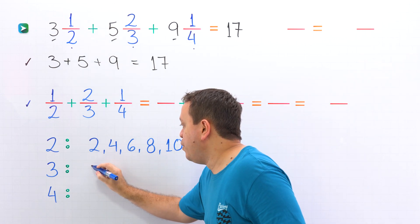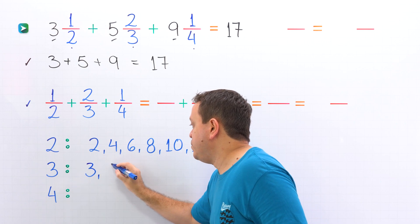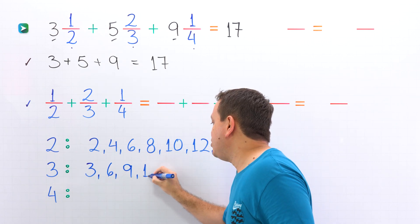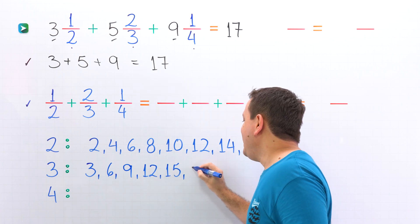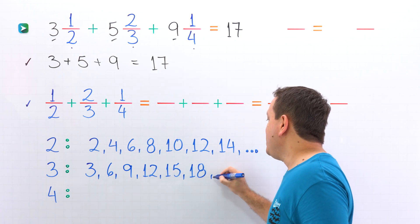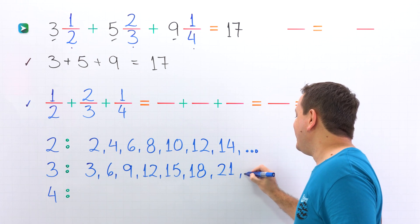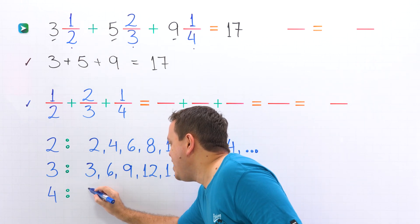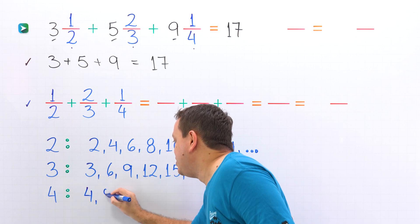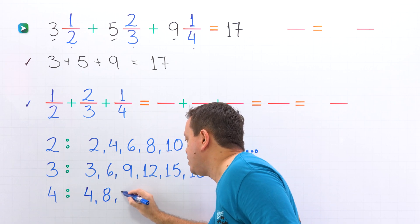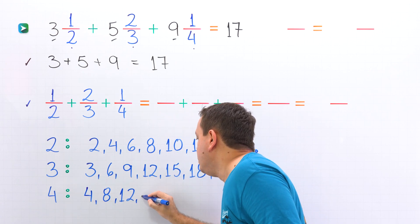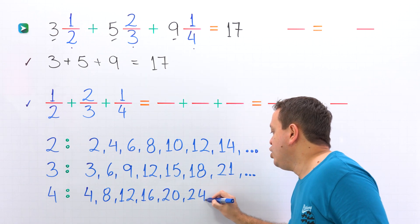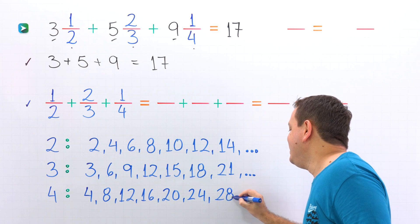The first multiples of three are: three, six, nine, twelve, fifteen, eighteen, twenty-one, and so on. The first multiples of four are: four, eight, twelve, sixteen, twenty, twenty-four, twenty-eight, and so on.